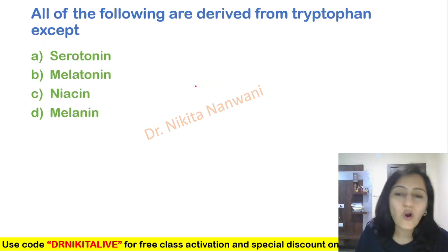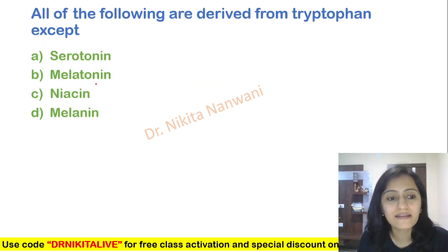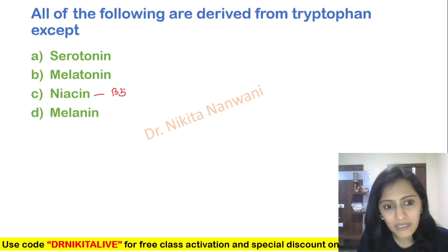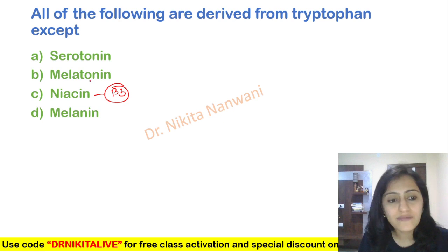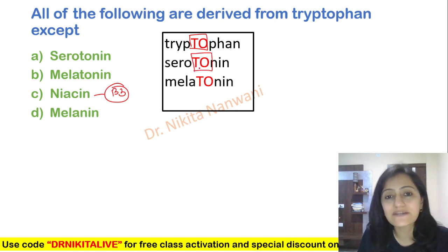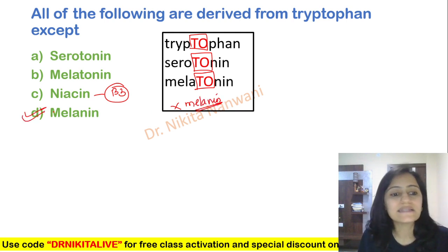The last one: all of the following are derived from tryptophan except — serotonin, melatonin, niacin, or melanin? Niacin B3 — we just said tryptophan. The trick to remember: tryptophan gives serotonin and melatonin — T-O. Remember, it does not form melanin, so the answer is melanin.